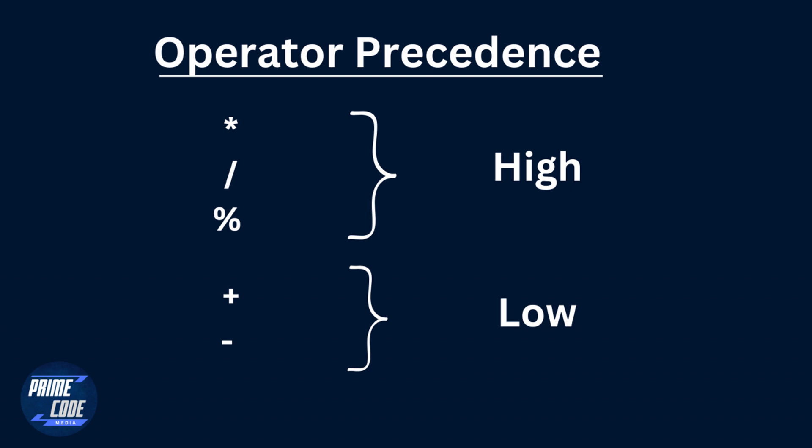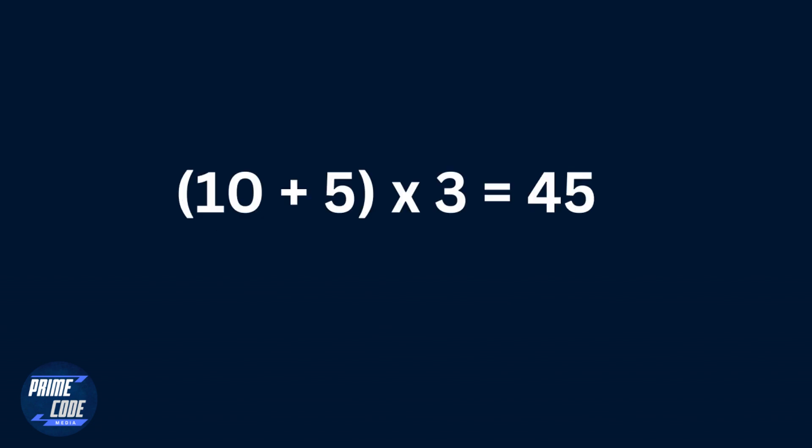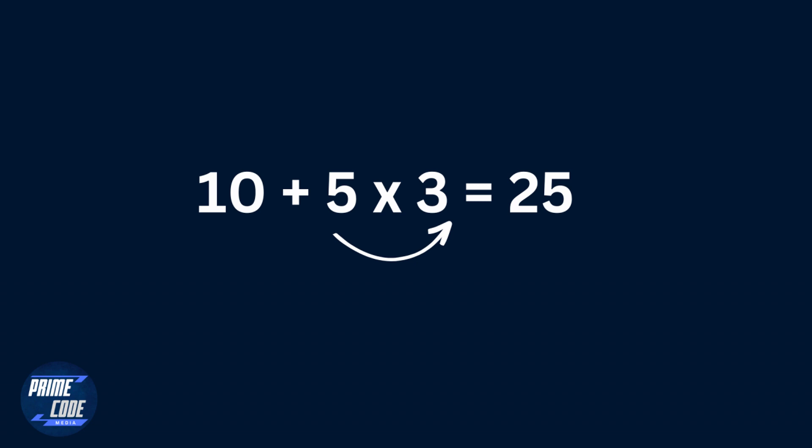Multiplication, division, and modular are calculated first, followed by subtraction and addition. But what if we want to add 10 to 5 before multiplying? We can do that, but in that case we will have to put 10 plus 5 inside brackets and this will indicate what we want to do first.